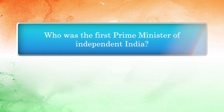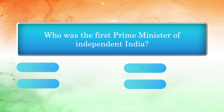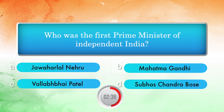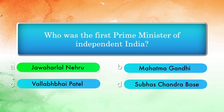Who was the first Prime Minister of Independent India? Options: Jawaharlal Nehru, Mahatma Gandhi, Vallabhbhai Patel, Subhash Chandra Bose. Answer: Jawaharlal Nehru.